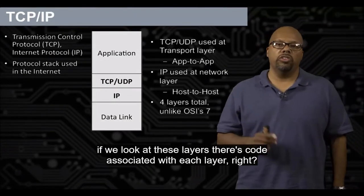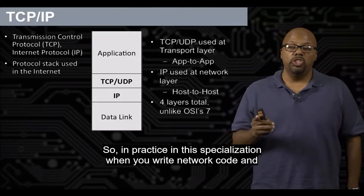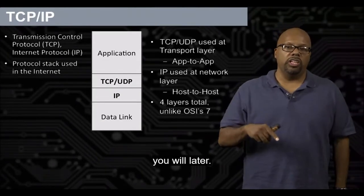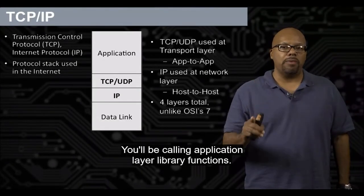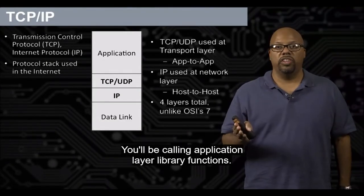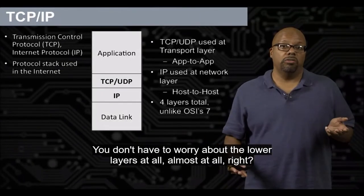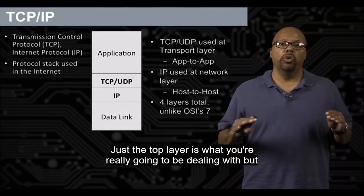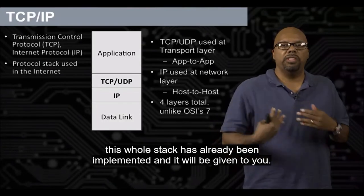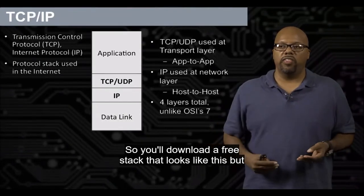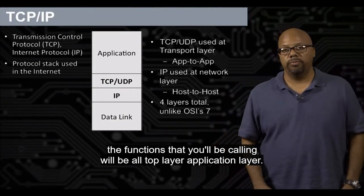If we look at these layers, there's code associated with each layer — they're typically library functions. In practice, when you write network code, you'll be calling application layer library functions — only the top layer. You don't have to worry about the lower layers at all. This whole stack has already been implemented and will be given to you. The functions you'll be calling will all be at the top application layer.